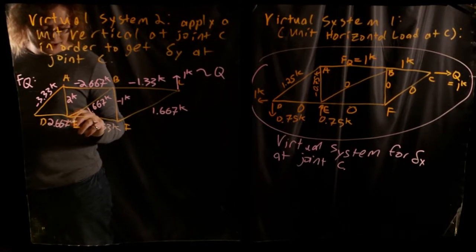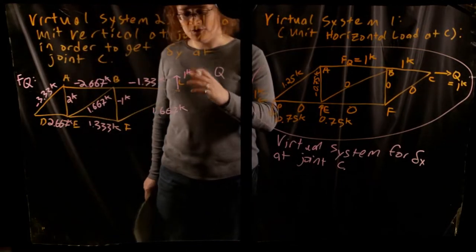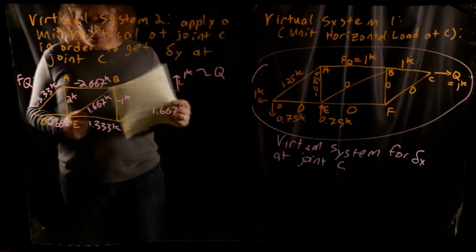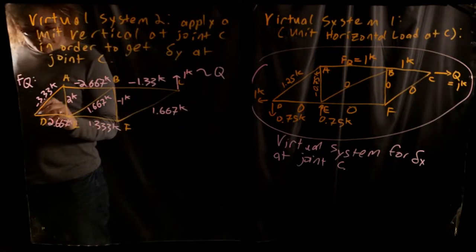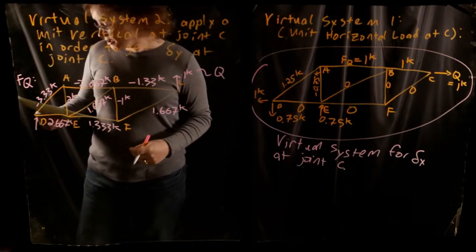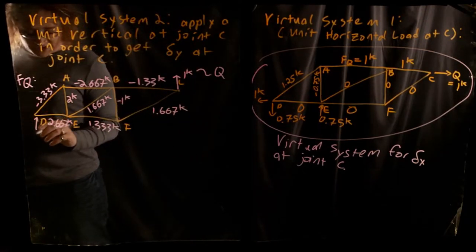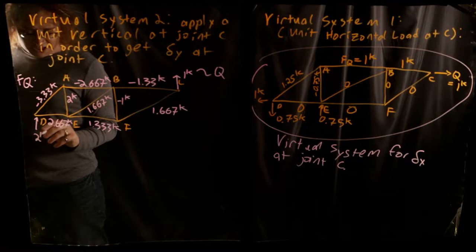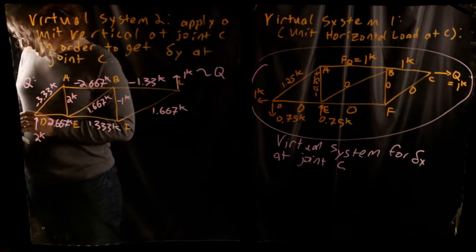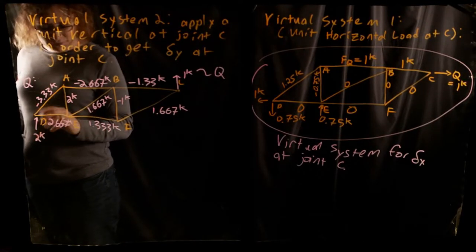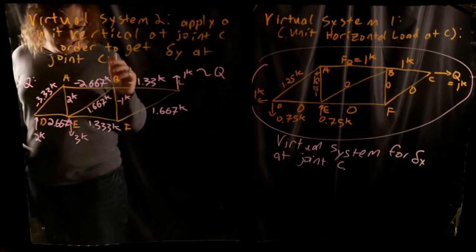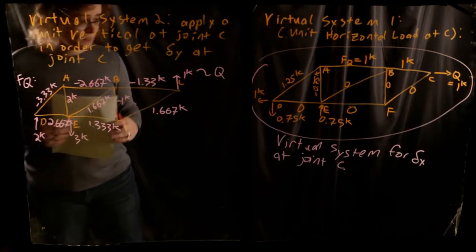All of these internal member forces can be produced simply by taking the unit loads, running through equations of statics, and solving for all internal member forces. The reactions for virtual system 2 — useful for checking results — were 2 kips upward at joint D and 3 kips downward at joint E. We don't need the reactions for the work-energy equation, but they help verify our results.